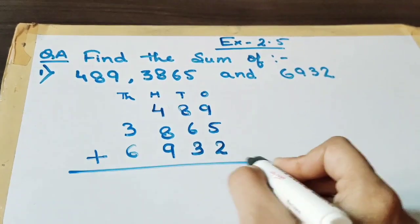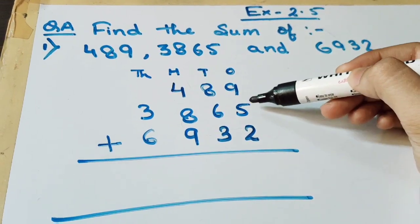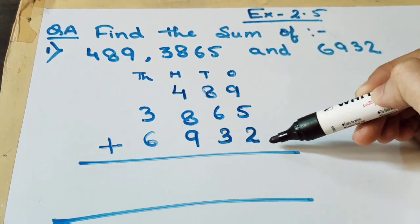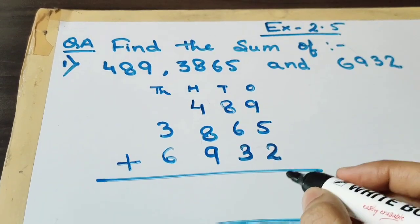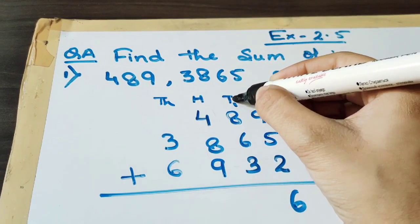Now we will add the number. Let's add it. 9 plus 5 plus 2. That is 16. So here I have written 6 and 1 will be the carry.